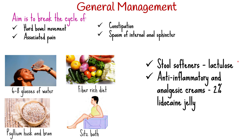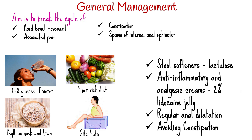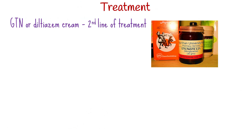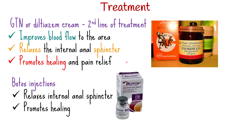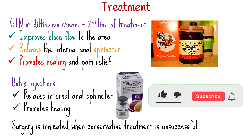Anti-inflammatory and analgesic creams like 2% lidocaine jelly are used. After recovery, regular anal dilatation, and avoiding constipation. If symptoms persist, GTN or diltiazem cream is used as a second line of treatment. This improves blood flow to the anal area and relaxes the internal anal sphincter, which relieves pressure on the fissure and promotes healing and pain relief. Botox injections can be given into the internal anal sphincter to relax and promote healing. Surgery is indicated when conservative treatment is unsuccessful.